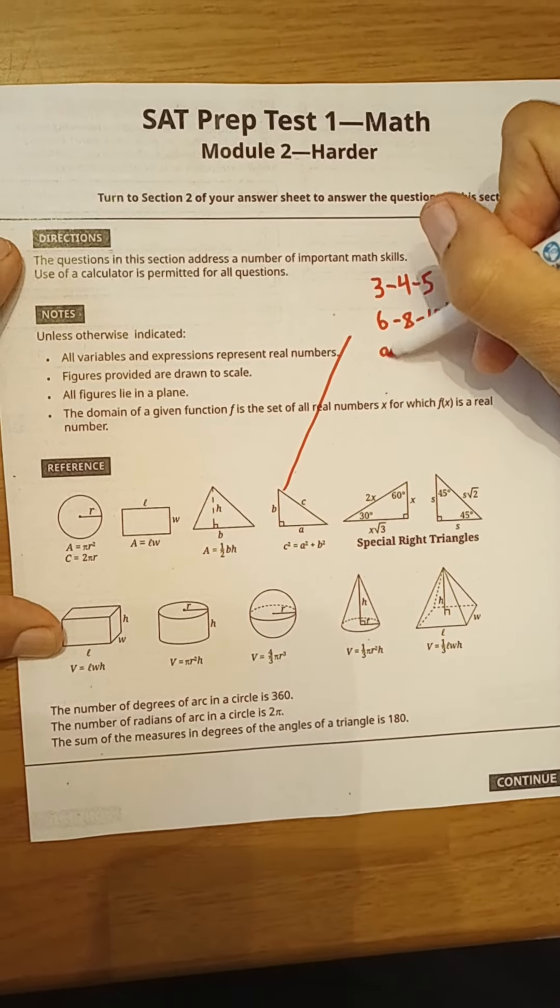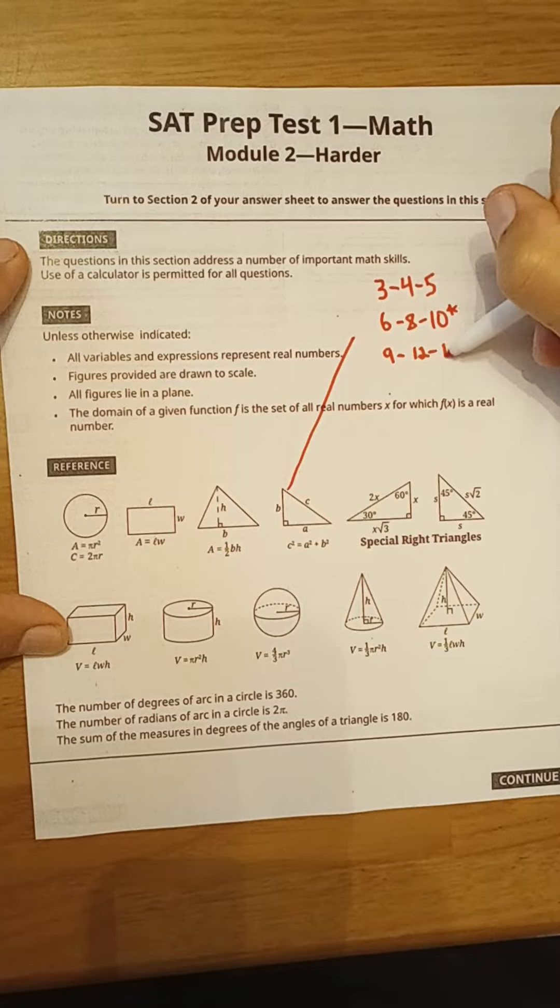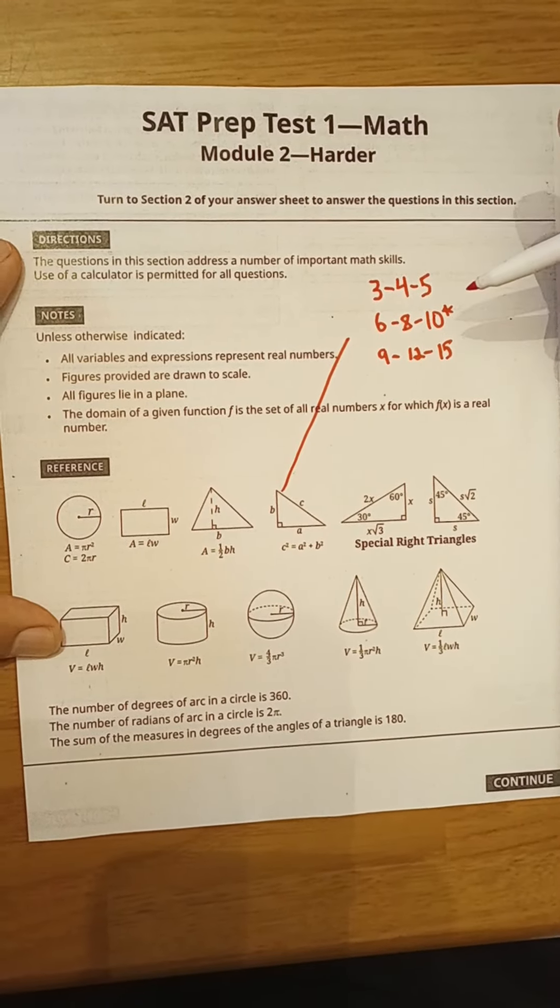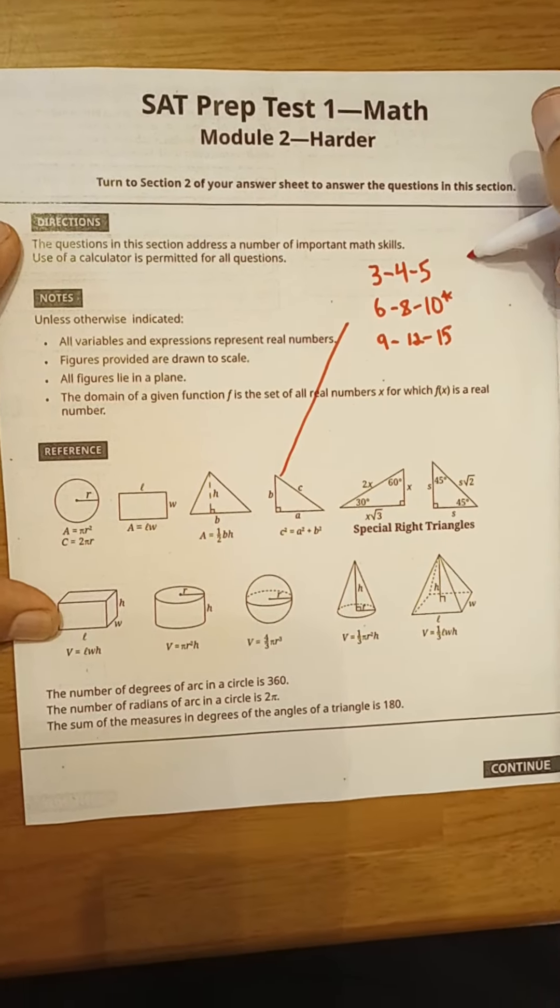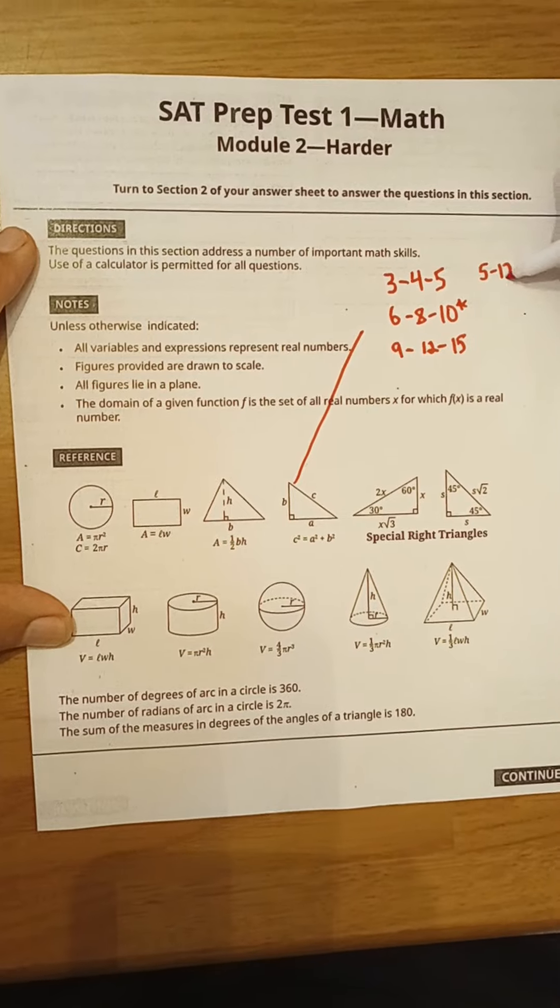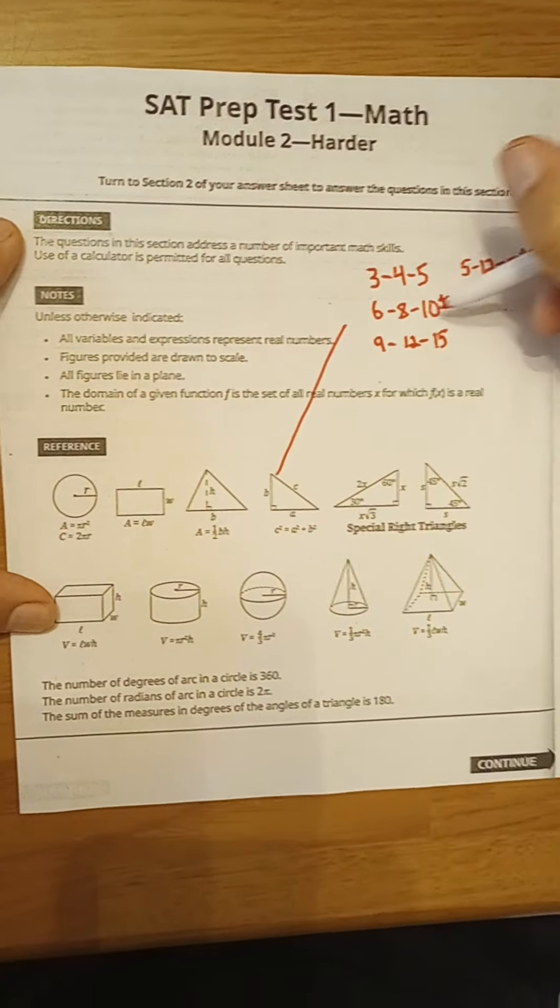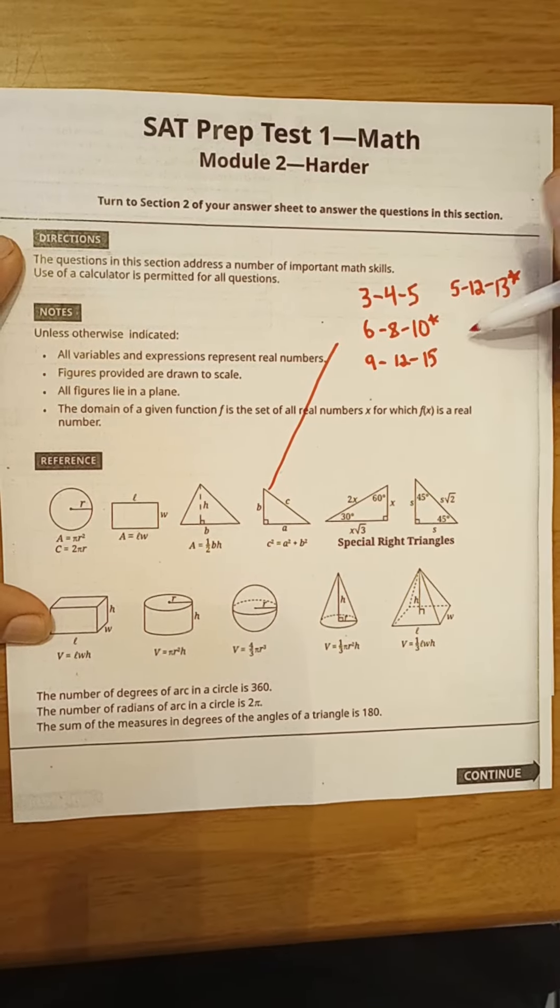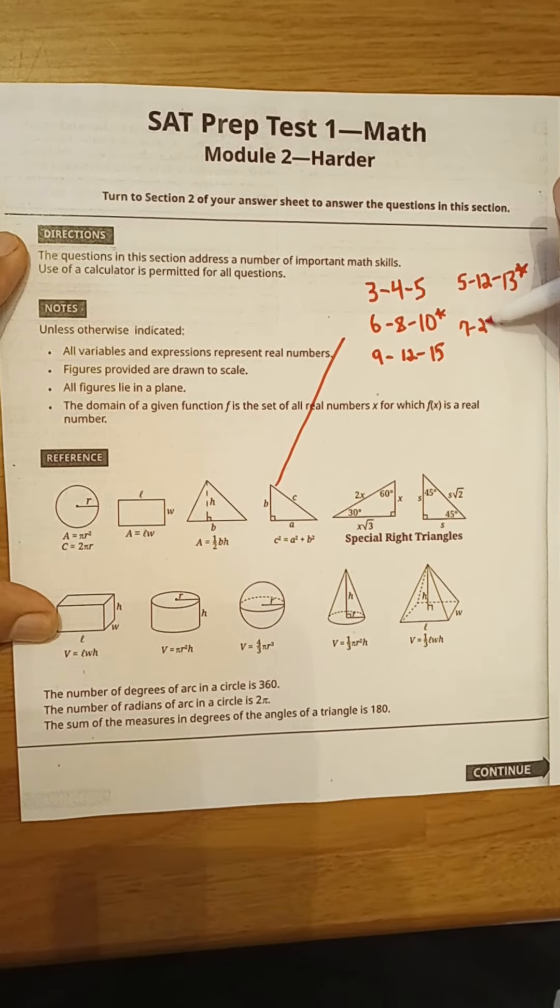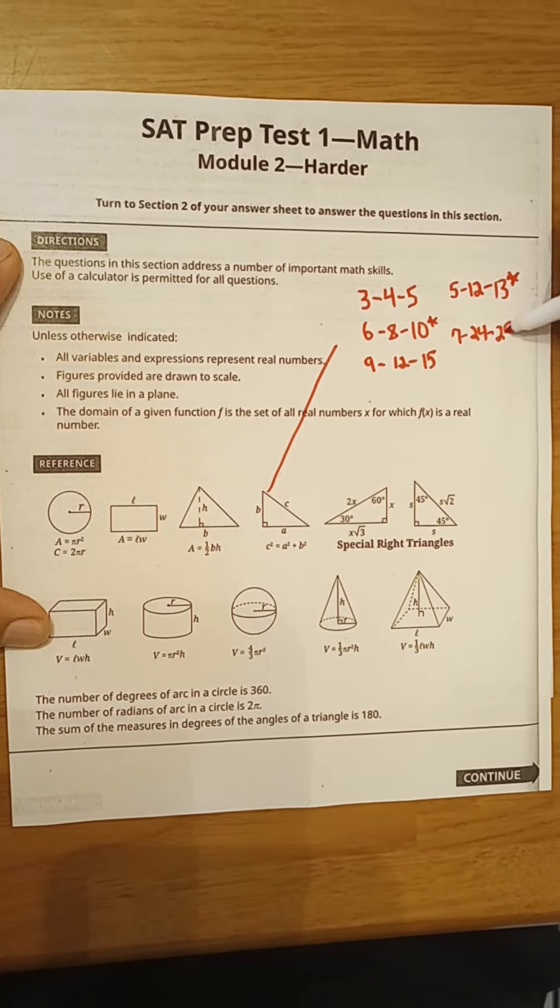And then 3, 4, 5 times 3 is 9, 12, 15. And then two others that come up a lot, especially this one, is the 5, 12, 13. I put an asterisk there because these two are probably the most common. And then the 7, 24, 25.